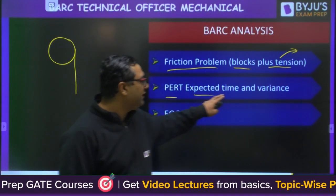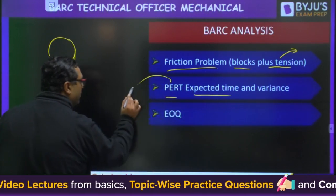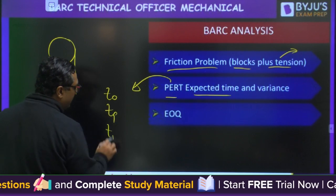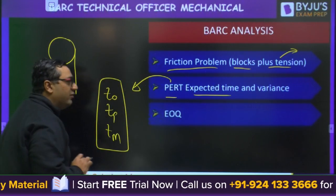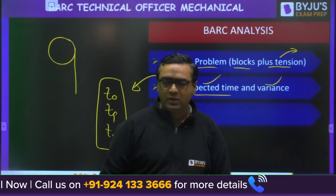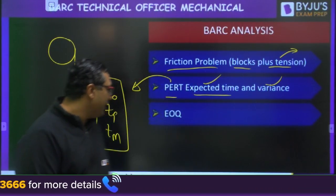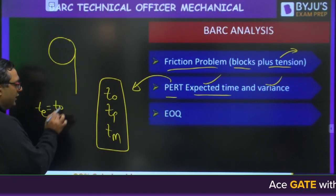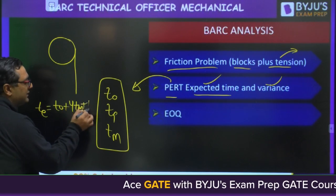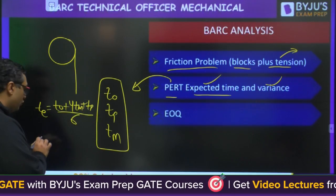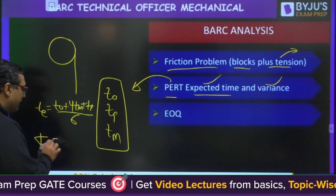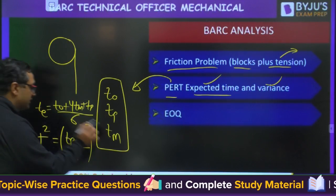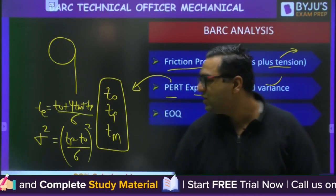A PERT expected time calculation was there. If you remember, there are three time estimates in the beta distribution: optimistic (T₀), pessimistic (Tₚ), and most likely time (Tₘ). All three were given, and they asked for expected time and variance. The expected time formula is (T₀ + 4Tₘ + Tₚ) / 6, and variance is [(Tₚ - T₀) / 6]². This was from industrial engineering.